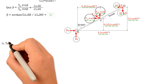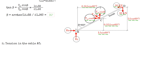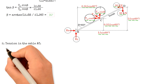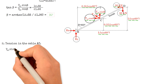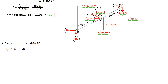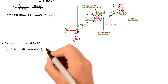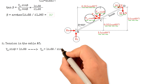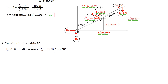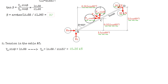Moving on to the second question, to find the tension in cable AC, we use the equation tension AC times sine of beta equals 12.68 kN. Substituting the value of beta equals 30 degrees, tension AC equals 12.68 kN divided by sine of 30 degrees, and the result is 25.36 kN.